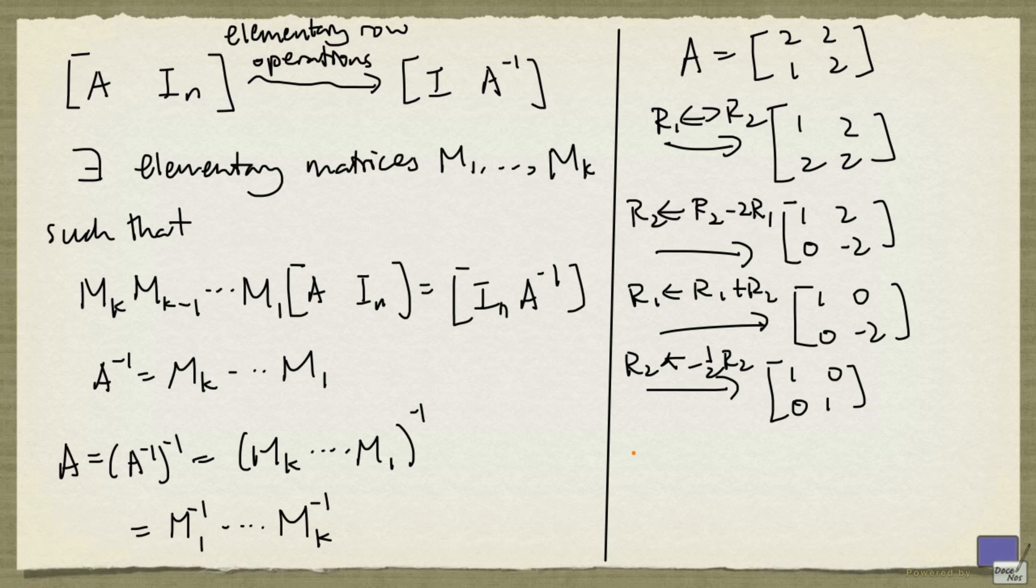So we can write A as the inverse of the elementary matrix corresponding to the first operation. So in this case, it's interchanging row 1 and row 2. The elementary matrix for that is [0, 1, 1, 0].